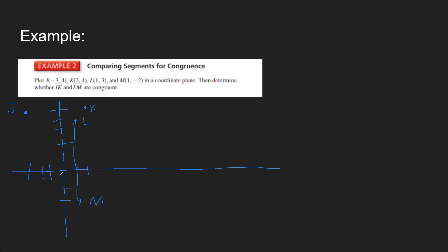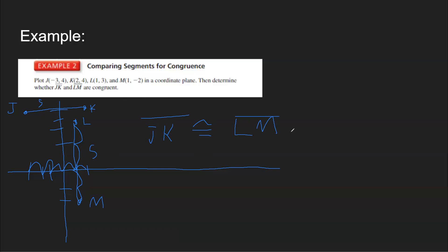So I'll connect these two points. For JK: 1, 2, 3, 4, 5 — five units apart, so JK is 5. For LM: 1, 2, 3, 4, 5 — LM is also 5 units apart. So you can say that JK is congruent to LM because they are both 5 in length.